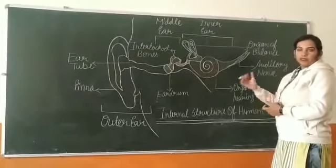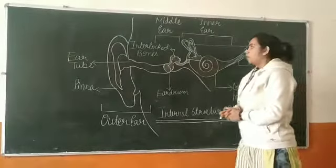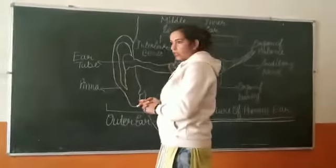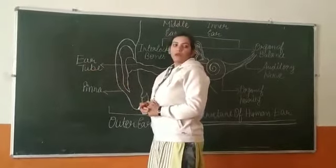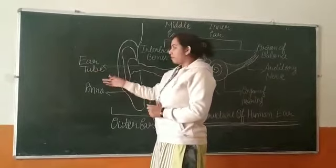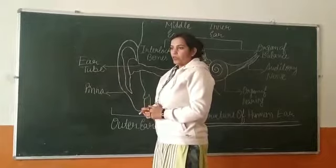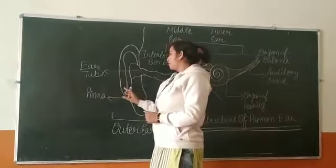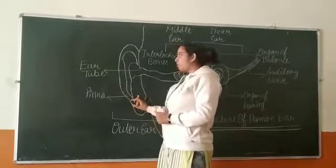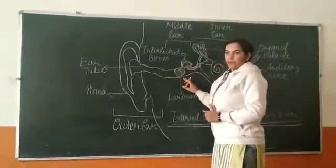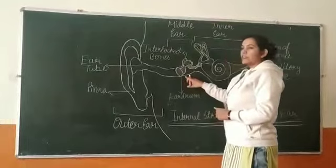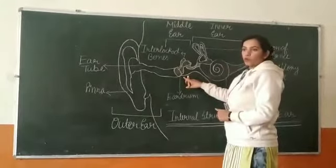Now coming to the working of the ear. First, what will happen is whenever there is a sound in the outer environment, there will be vibration in the air molecules. Now these vibrations will first enter the pinna part, through which all these vibrations will enter the ear tube and finally reach the eardrum. Here the frequency will be the same; there will be no change.